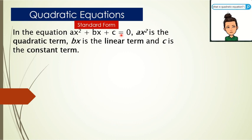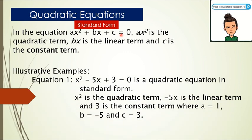Let us have an illustrative example for you to understand better. Example 1: x squared minus 5x plus 3 equals 0 is a quadratic equation in standard form. In this equation, x squared is the quadratic term, negative 5x is the linear term, and 3 is the constant term, where a equals 1, b equals negative 5, and c equals 3. The value of a is the numerical coefficient of the quadratic term, b is the numerical coefficient of the linear term, and c is the constant term itself.